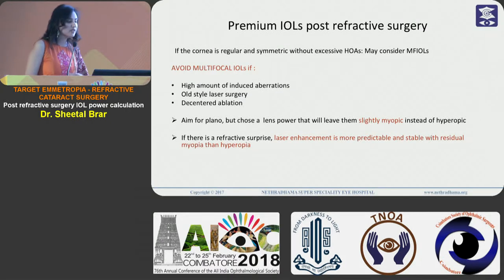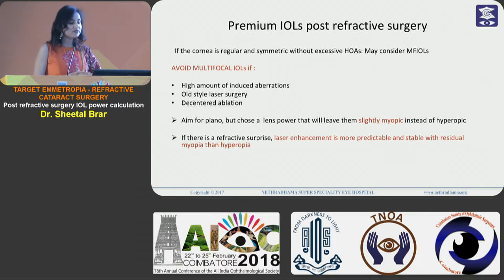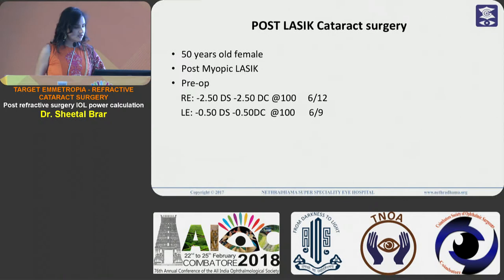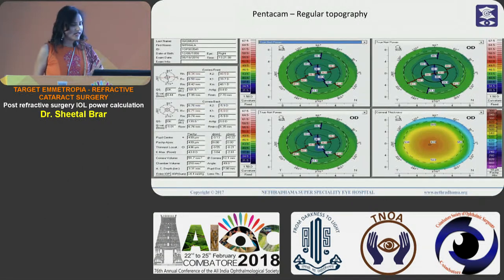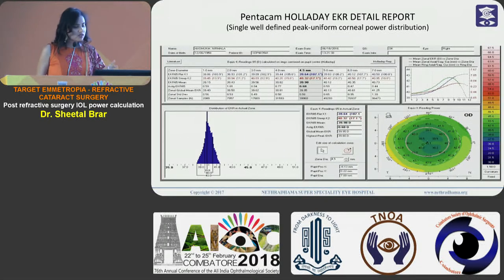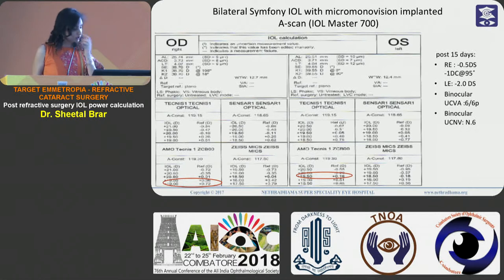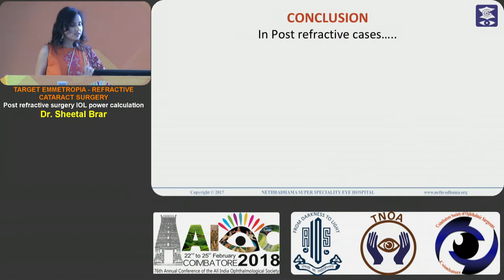Can we implant premium IOLs post-refractive surgery? Yes, it can be done if the cornea is regular and symmetric without excessive higher order aberrations. We should avoid premium IOLs if there are high amounts of aberrations induced by old-style laser surgery or decentered ablations. In a post-LASIK cataract case where topography was very regular with minimal aberrations, we used the EKR Holladay values from the 4.5 mm zone along with the Barrett Universal II formula for final IOL power calculation, and the patient had a good outcome.